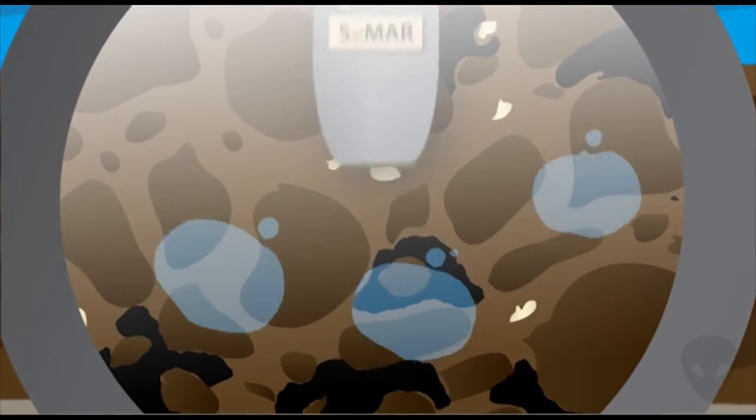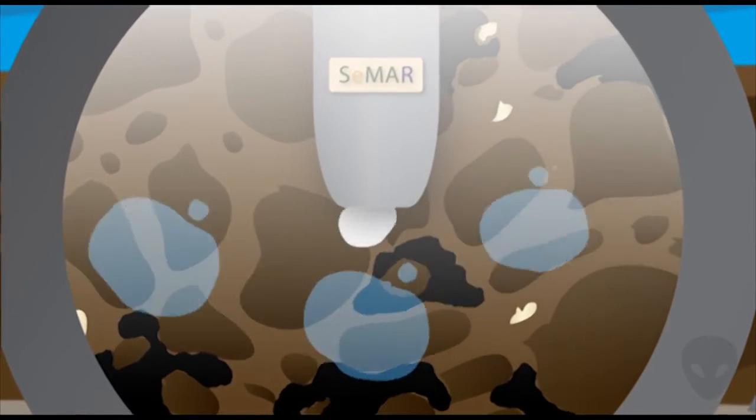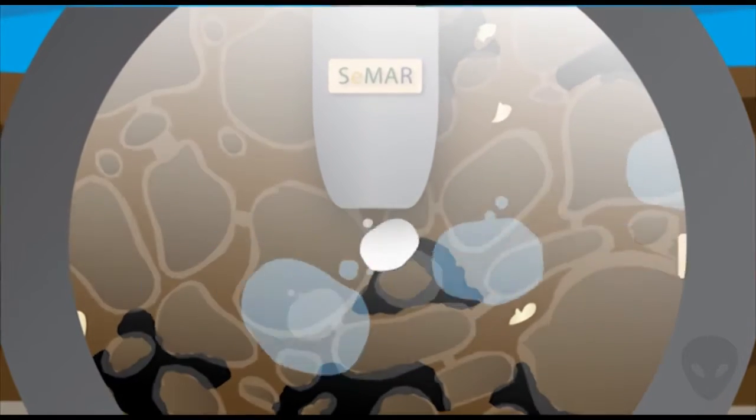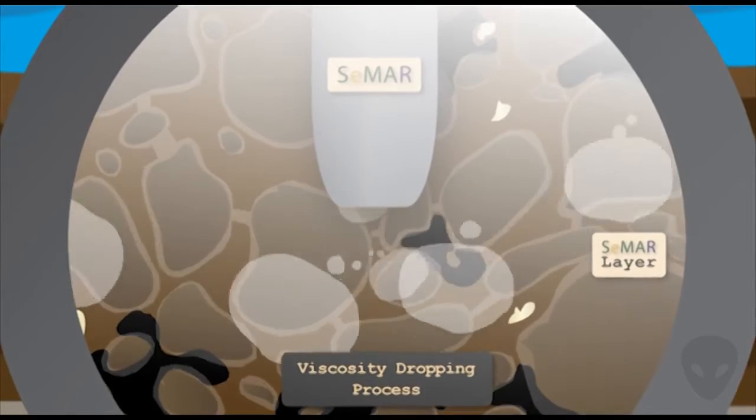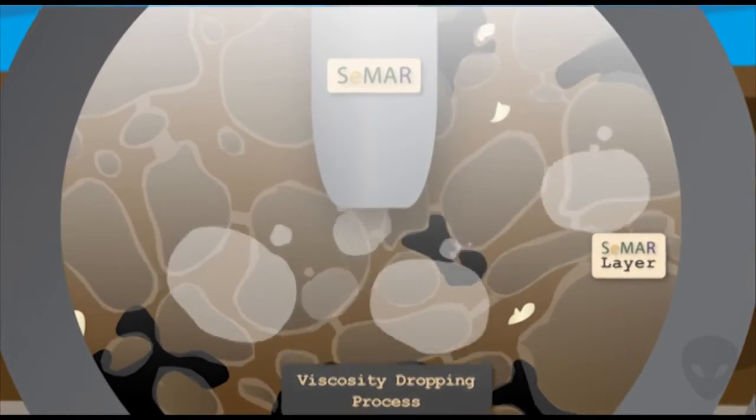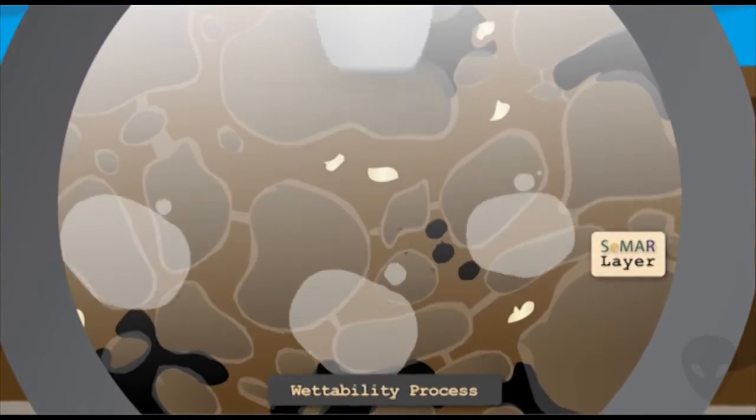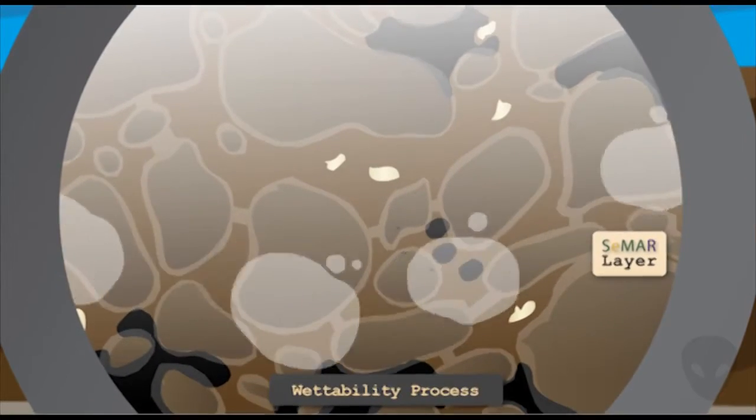But if we inject SMAR to the reservoir instead, SMAR can make a viscoblock layer, which increases the water formation viscosity so the remaining oil that sticks in the reservoir rock can be easily moved to the production well.